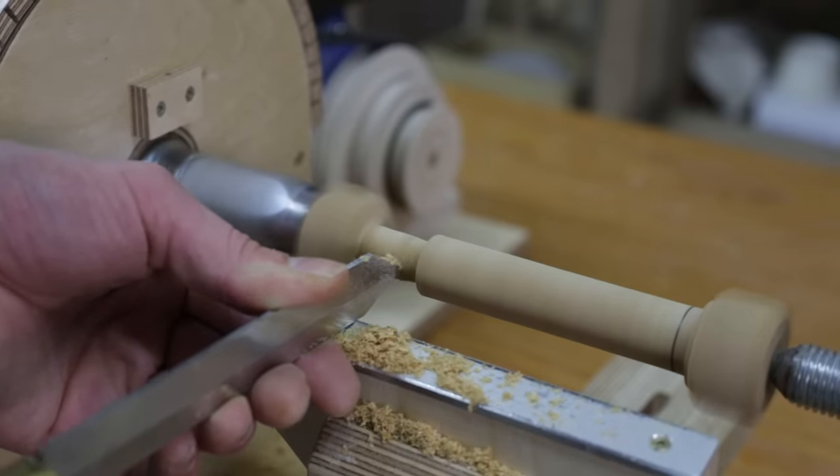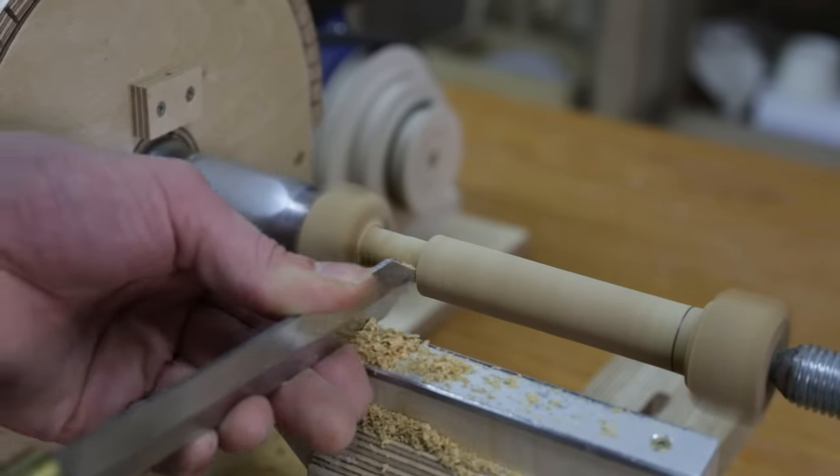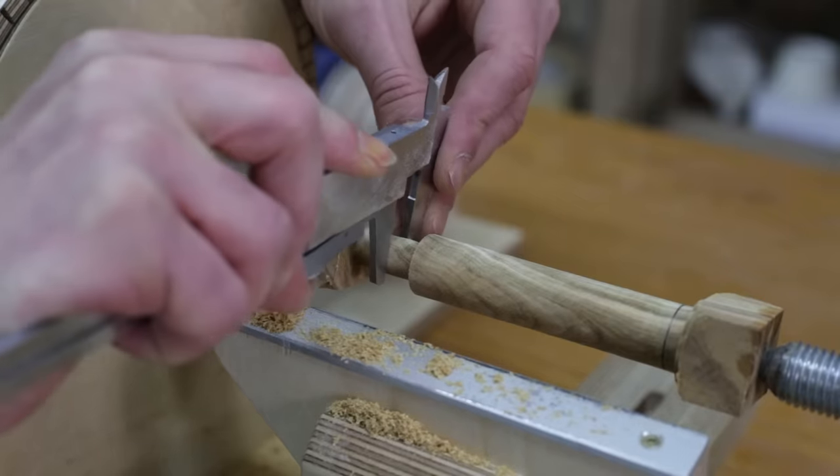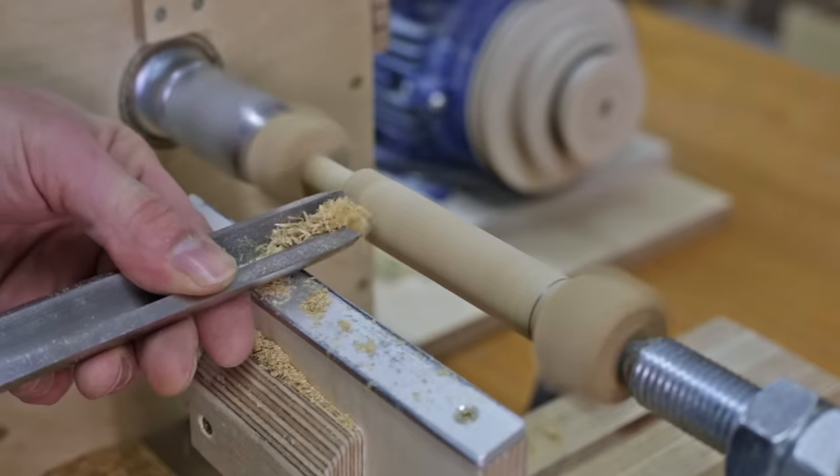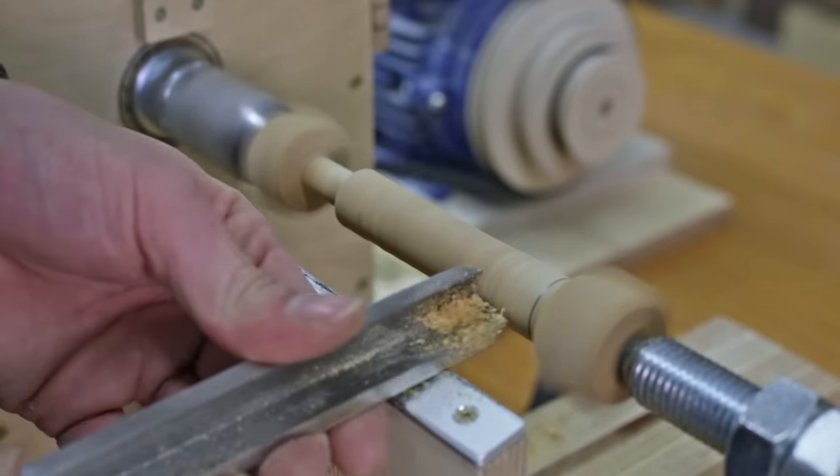This part will be used to insert the steel tube. I check the measurements with a caliper, finish shaping the handle and take advantage of the lathe's rotation to sand the wood.